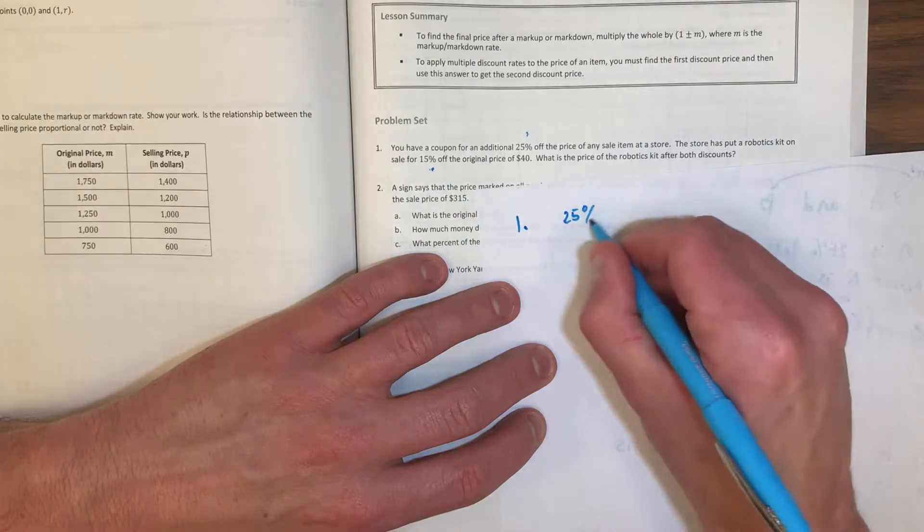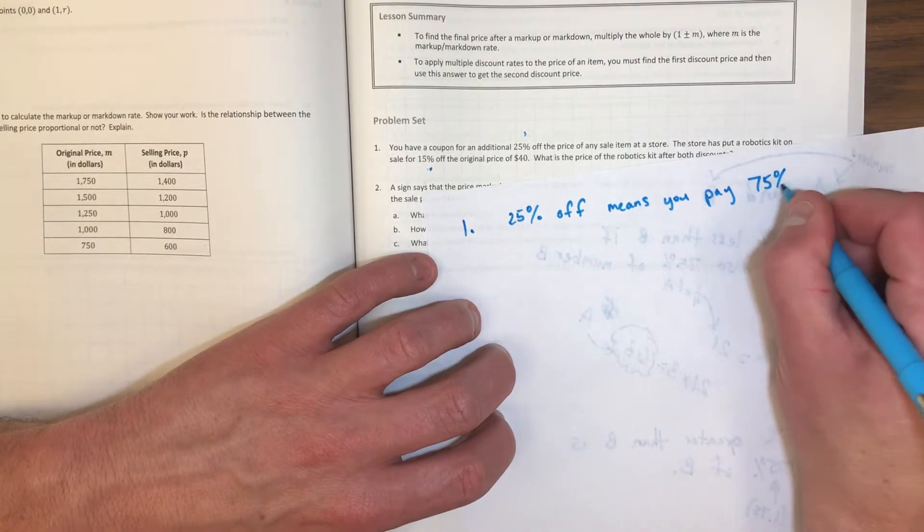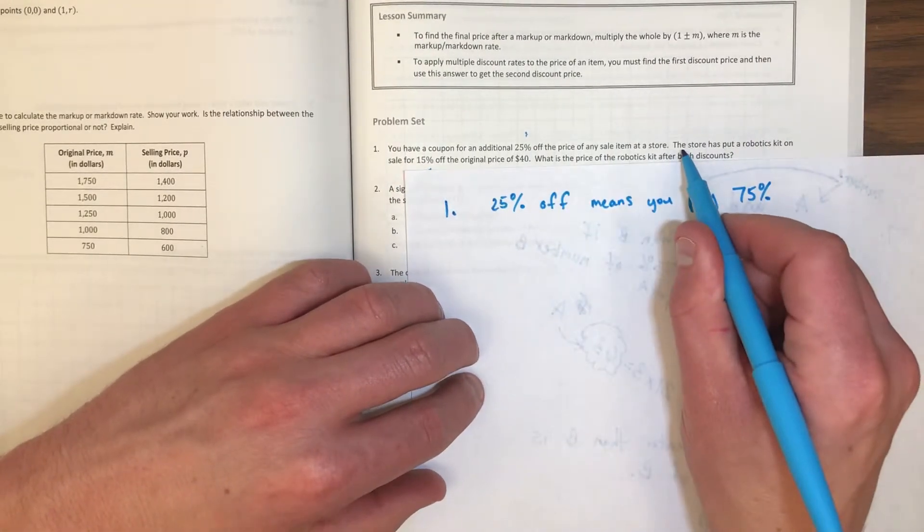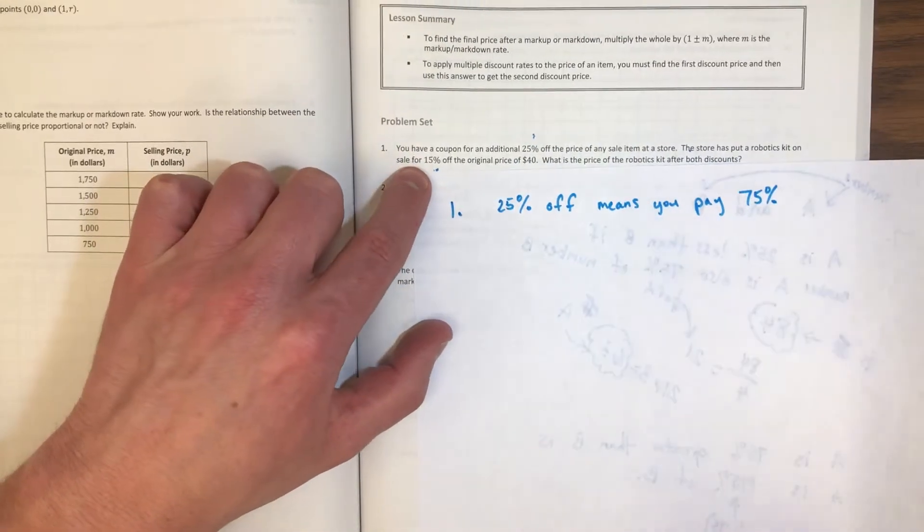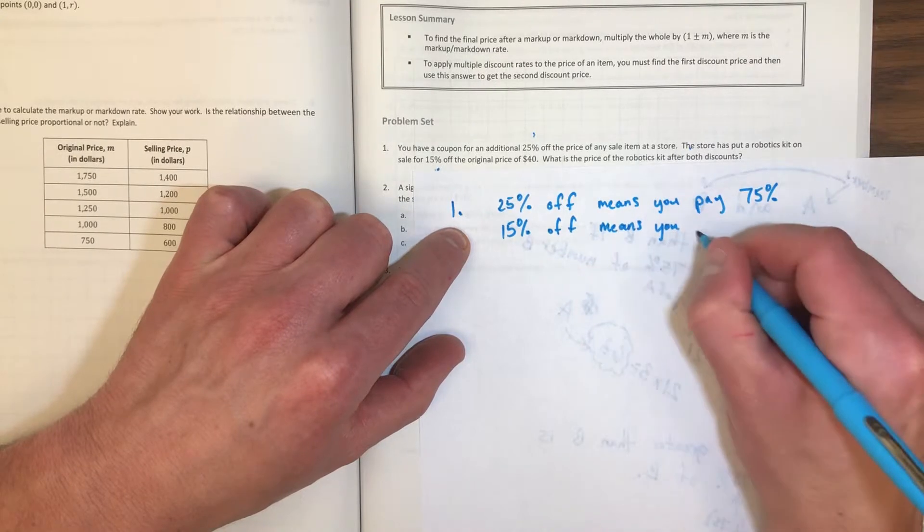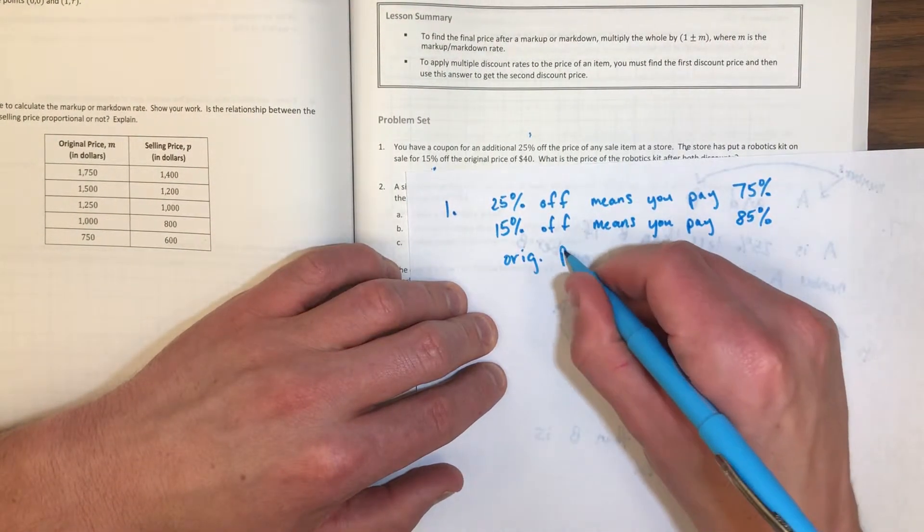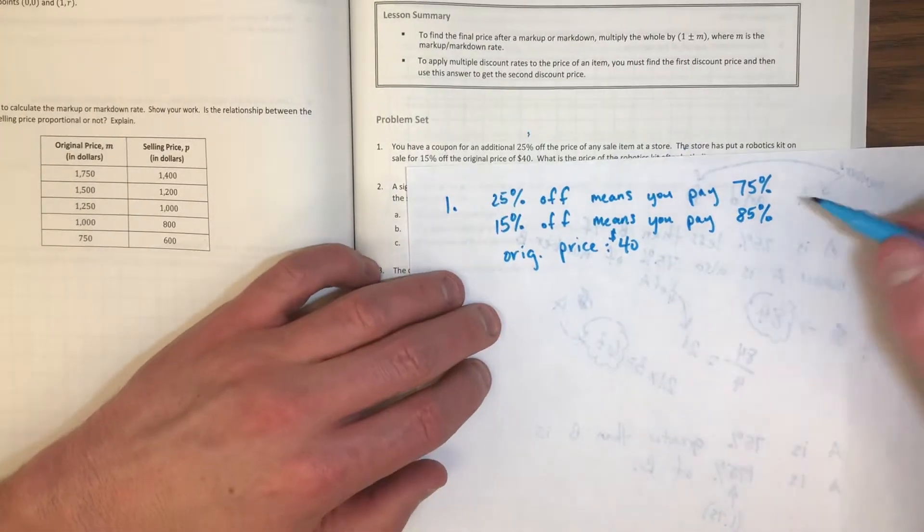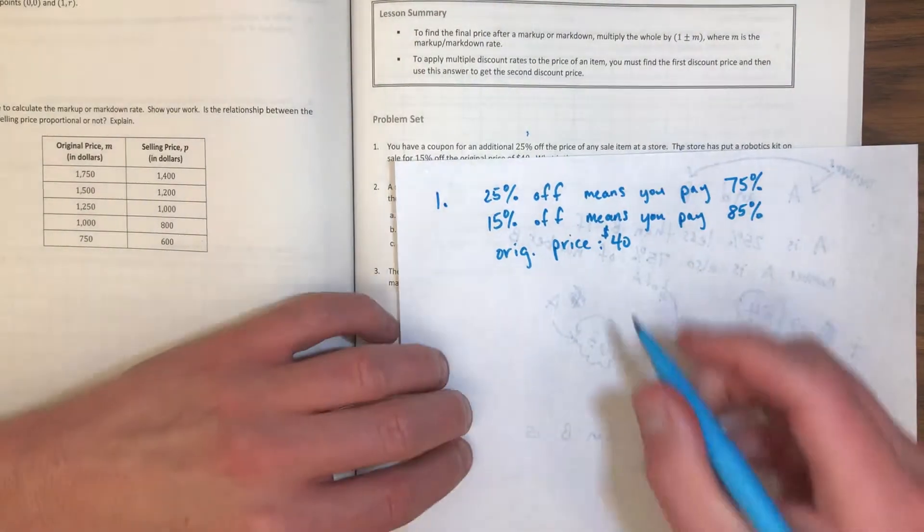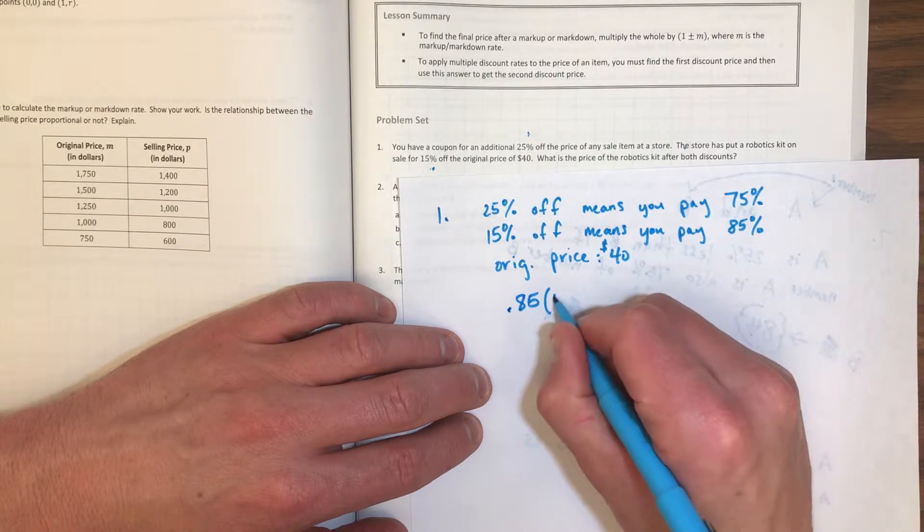So let's think of it this way: If you have a 25% off coupon for something, then 25% off means you pay 75% of the price. Right? If something costs 100% of its price and you take 25% off, you pay 75%. And then the same thing here could be said - the store has put a robotics kit on sale for 15% off the original price. Well, 15% off means you pay 85%.